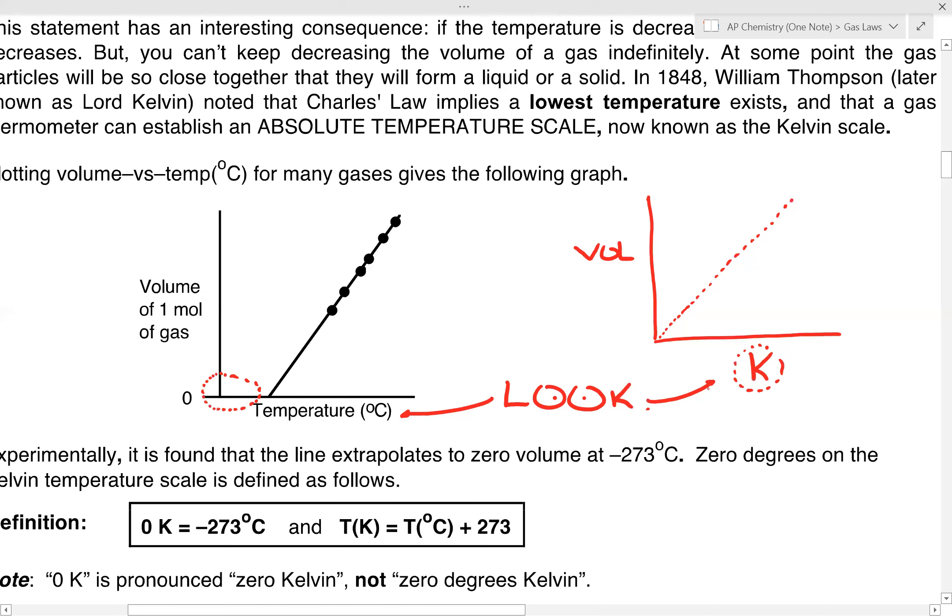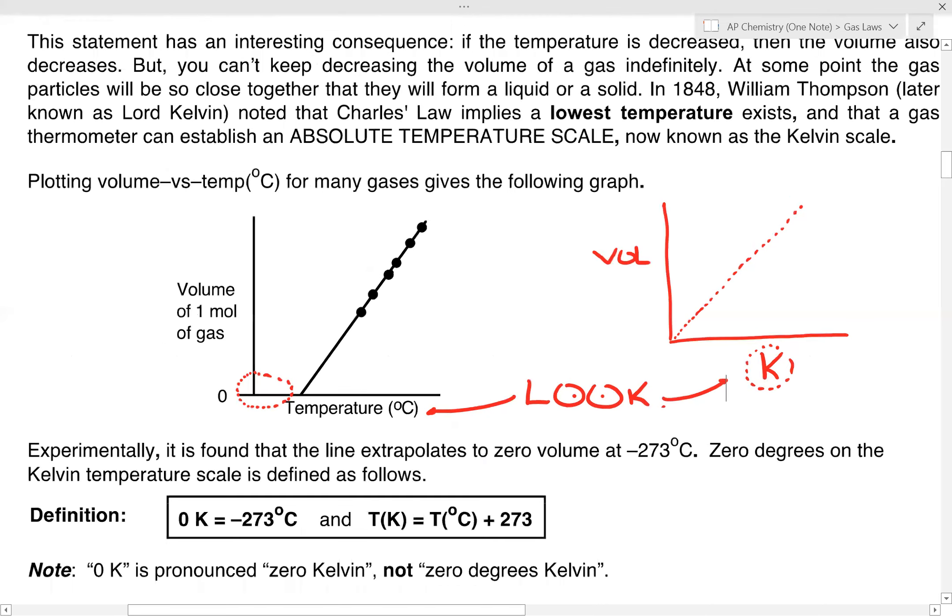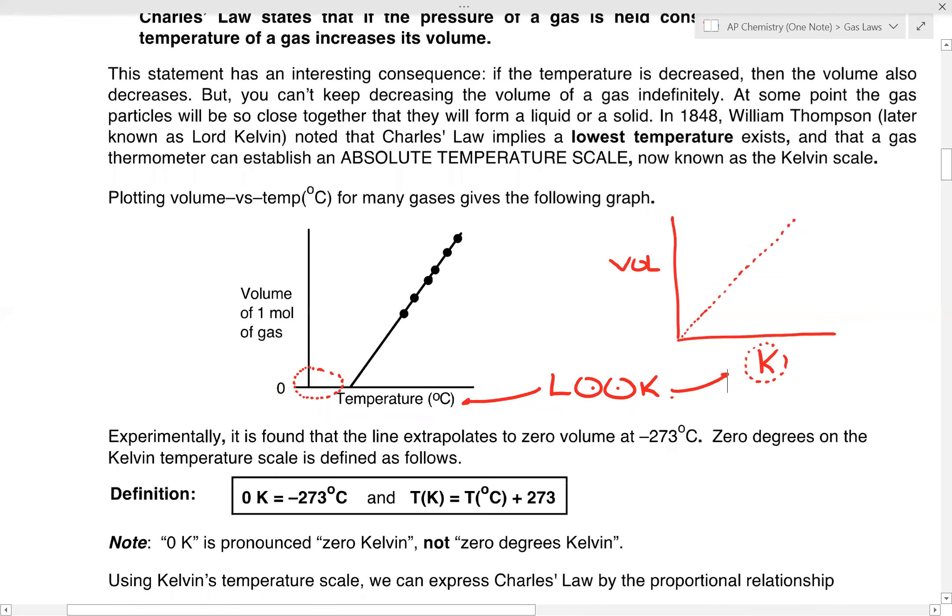If we had the volume and if this was Kelvins for temperature, yes, theoretically, the volume and temperature should go through the origin. But please make sure you know the difference between the two.